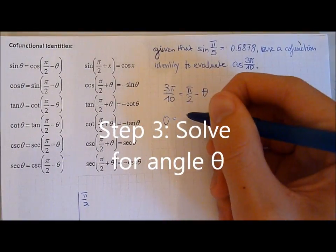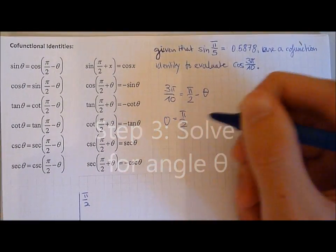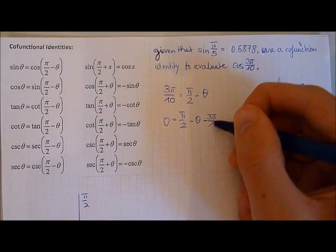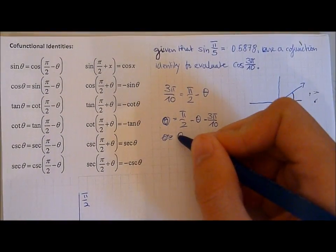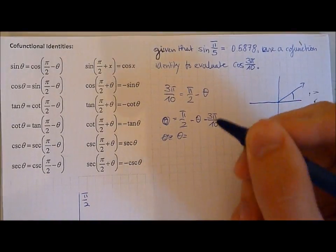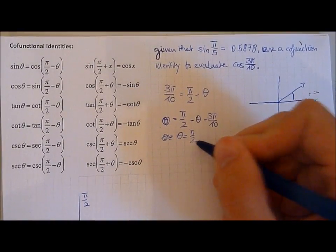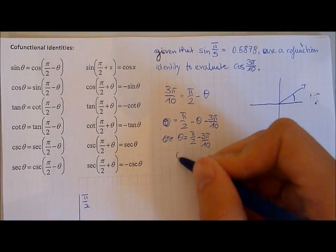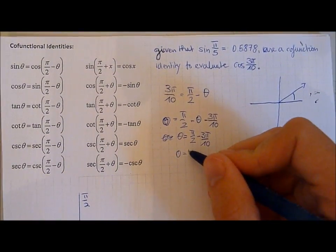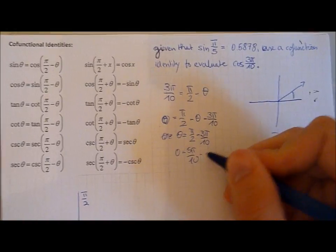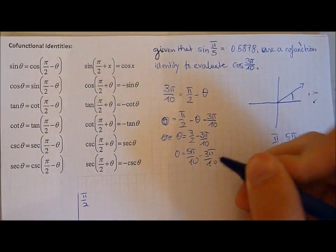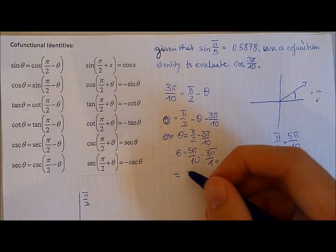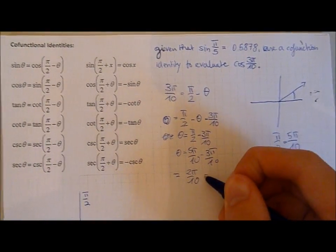Now the next step is to solve for this angle. 0 equals pi over 2 minus beta minus 3 pi over 10. So theta is equal to 5 pi over 10 minus 3 pi over 10 which is equal to 2 pi over 10 which is equal to pi over 5.